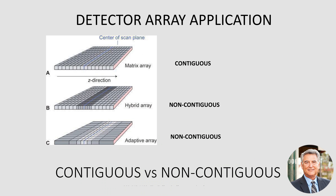What about the application relative to detector array? Contiguous is on top. Look at the matrix array — all the rectangles are proportionate, they look like one another, and they're adjacent and touching one another. That's in direct opposition to what's going on in the hybrid array and the adaptive array. Look at how those rectangles are of different dimension and different relationships to one another. That makes them non-contiguous — both the hybrid and the adaptive array are non-contiguous.